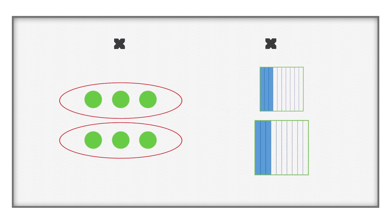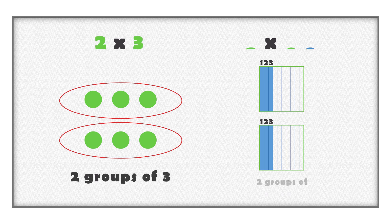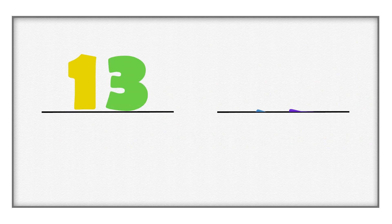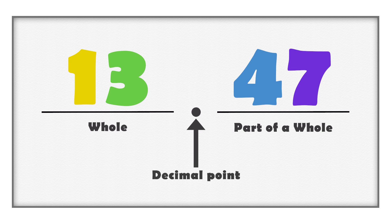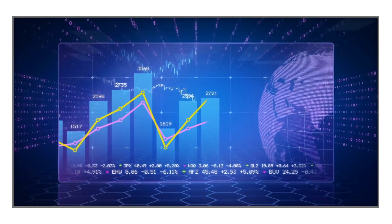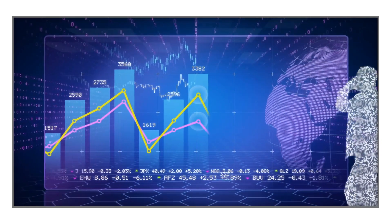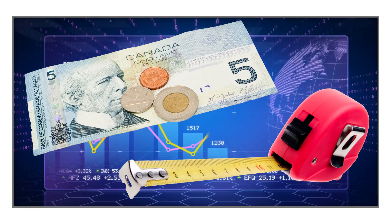Multiplication is an operation that shows the total value of equal groups. We can multiply different numbers, including whole numbers and decimals. Decimals are values that include a whole and part of a whole, separated by a decimal point. Decimals are all around us, and we use them in our daily lives. Money and measurements are common examples of decimal numbers.